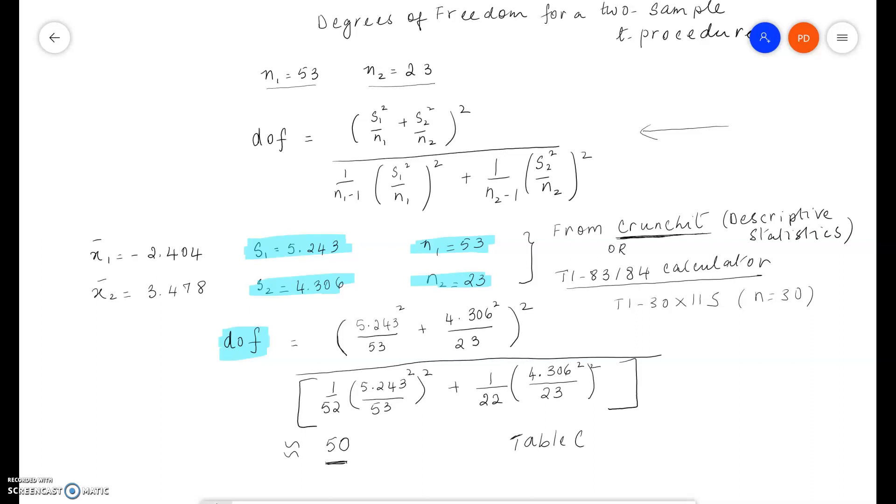If you're using Table C, which you need to in these problems, you'll have to use degrees of freedom 50.